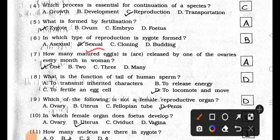Number 7. How many matured eggs are released by one of the ovaries every month in women? A. 1, B. 2, C. 3, and D. Many. Answer is Option A, 1.